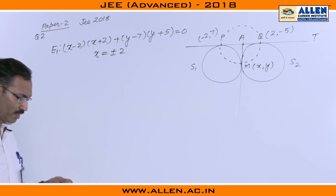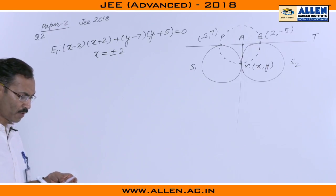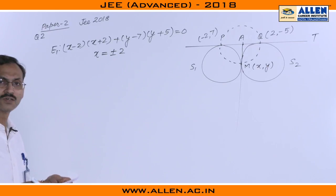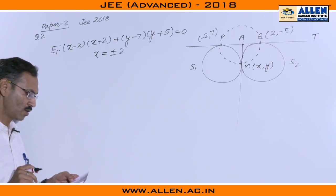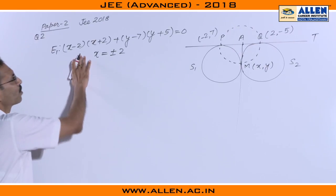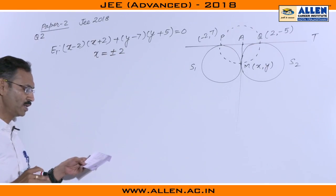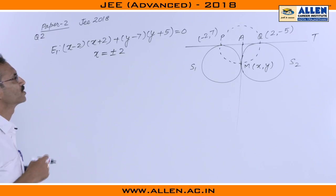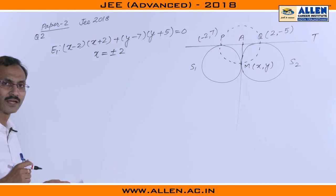There are two options based on E1. The first option says the point minus 2 comma 7 lies on E1, so this option is wrong. And D is 0 comma 3 by 2 does not lie on E1. 0 comma 3 by 2 we can see is really not lying on this locus E1. That is why D option is correct.